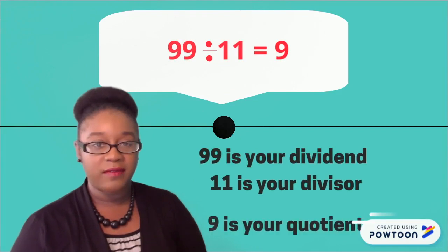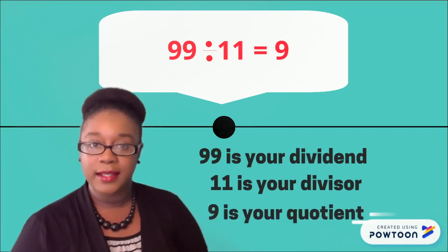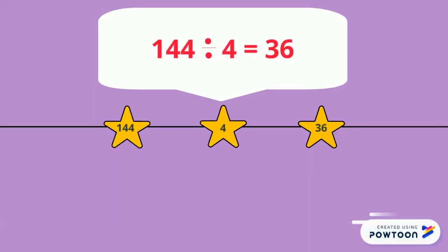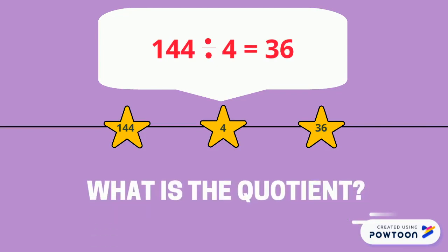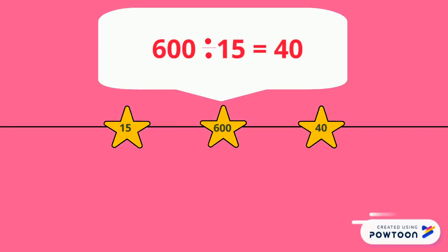Now it's your turn. In the example 144 divided by 4 is equal to 36, what is the quotient? If you said 36, you are correct. Let's look at another example.